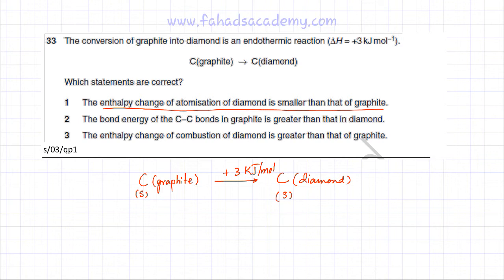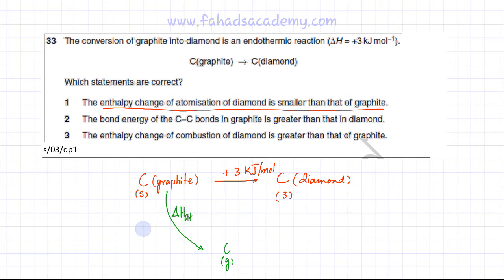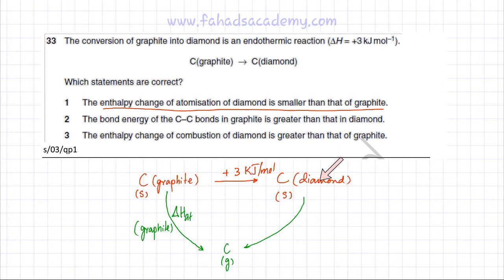The enthalpy change of atomization is when one mole of gaseous carbon atoms is formed from the element. So the enthalpy change of atomization of graphite means one mole of carbon in graphite form is converted into gaseous atoms. Similarly, one mole of carbon in diamond form converted into gaseous atoms gives the enthalpy of atomization of diamond. This completes our Hess cycle based on enthalpy of atomization.